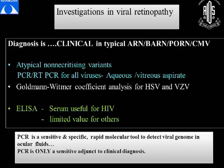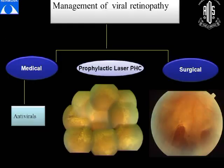Basically, your diagnosis in viral retinopathies — when you have a typical picture of ARN, PORN, or CMV — is clinical. But when you have atypical and non-necrotizing variants, aqueous or vitreous samples for PCR, RT-PCR, or Goldmann-Witmer coefficients may be very useful. And in patients with HIV, the ELISA may be useful.